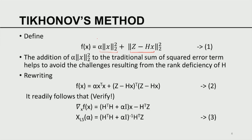What did Tikhonov say? Tikhonov said: consider a penalty function F of X equal to the square of the norm of Z minus H of X, plus alpha times the square of the norm of X, where alpha is a penalty parameter. We are looking for a solution that minimizes F of X — so alpha times the square of the norm must be as small as possible and Z must be as close to H of X as possible, but not exactly zero. The addition of the alpha times X-squared term to the traditional sum-of-squares criterion helps to avoid the challenges resulting from rank deficiency.